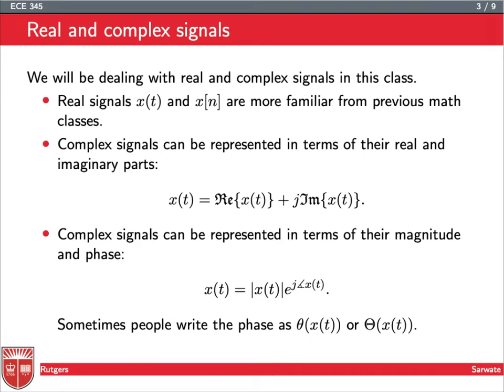So we're going to be dealing with real and complex signals. Real signals you're probably pretty familiar with, especially from calculus. Maybe you looked at f of x in calculus, but now you're looking at x of t in time. So for continuous time signals, you're familiar with a lot of operations you can do on those signals. Complex signals probably you have a little less experience with, but a complex signal is a signal whose output, the value that the signal takes on, is a complex number.